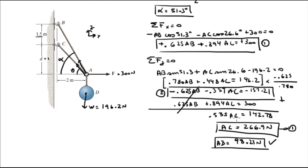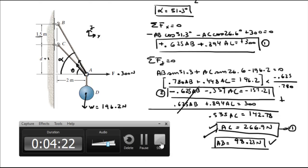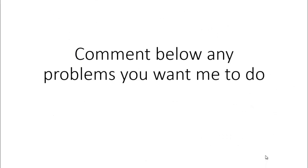So the final answers for the tension in those two cables: AC equals 266.9N and AB equals 98.23N. We also found the angles, and the distance D is given as 1. Please comment below if you want me to do any problems and I'll be happy to help. Thank you.